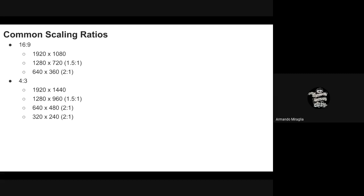Looking at common resolutions in 16:9 and 4:3 aspect ratios, they are typically either 2 to 1 or 1.5 to 1 ratios between common resolutions, which covers the vast majority of cases. The only slightly odd case is wanting three simulcast streams at 1920x1080, 1280x720, and 640x360, where the ratios are 1.5 and 2 to 1 but not consistent between layers. However, it was pointed out that you could just create a new scalability mode to handle this.